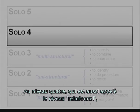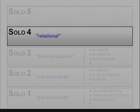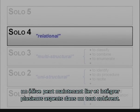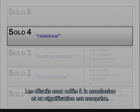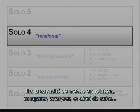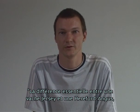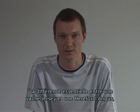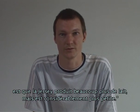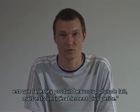At level four, which is called the relational level, a student can now link and integrate several parts into a coherent whole. Details are linked to conclusions and meaning is understood. He has the ability to relate, compare, and analyze. For example: 'The essential difference between a Jersey cow and a half-bred Angus cow is that a Jersey cow produces a lot more milk but is substantially smaller.'